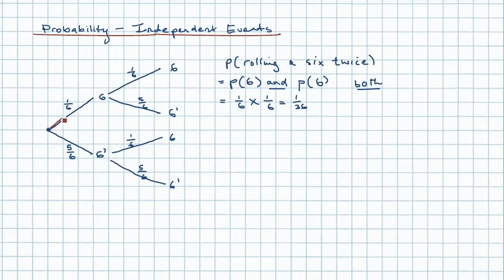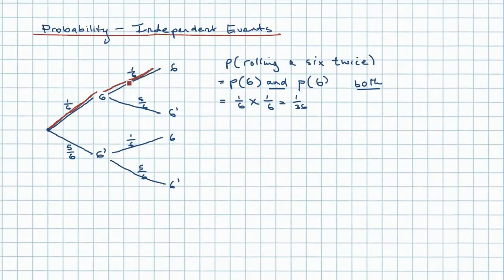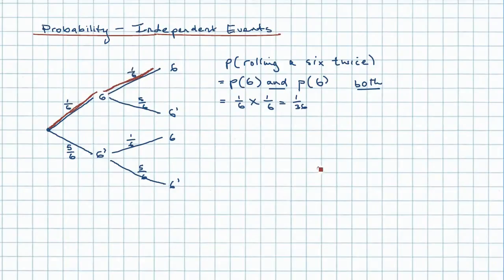We can see that multiplication very clearly on the tree diagram. When we go down this path, with our first roll we get a one in six probability, and there's only one other pathway we can go down. So when we're going across the diagram from event one to event two, we're going to be multiplying our probabilities - one-sixth times one-sixth.